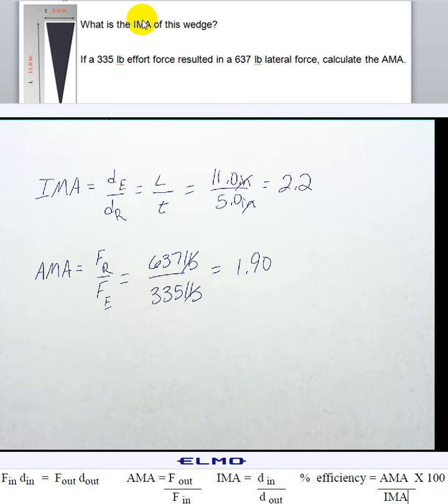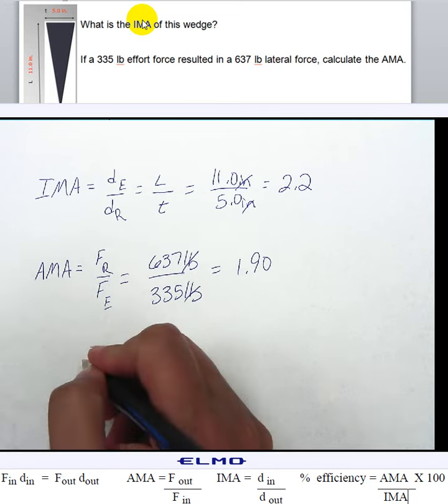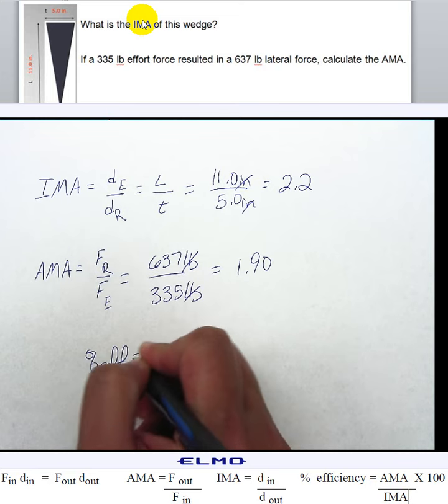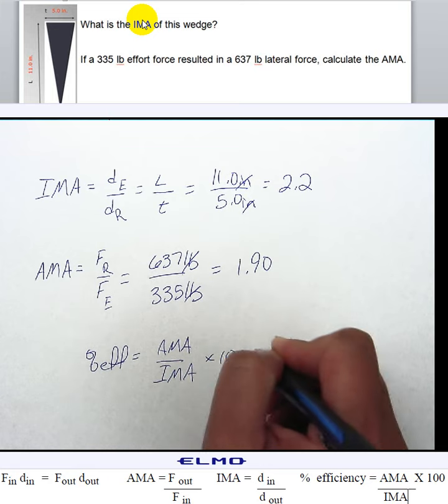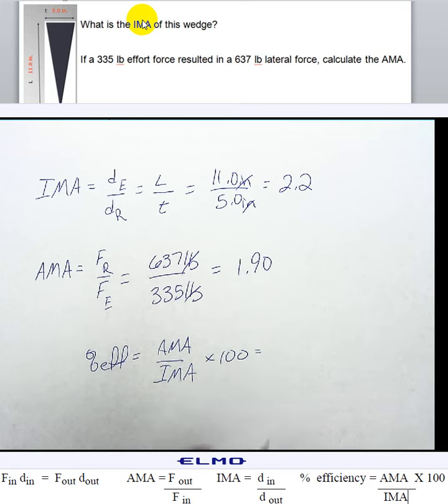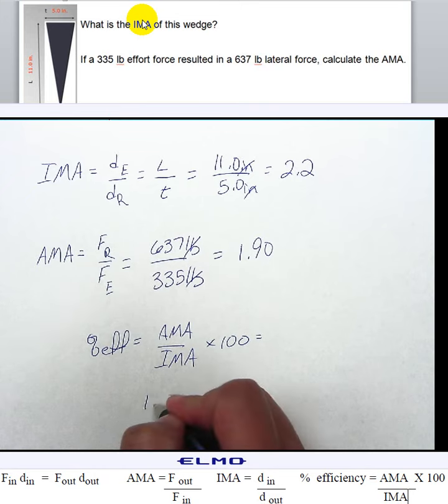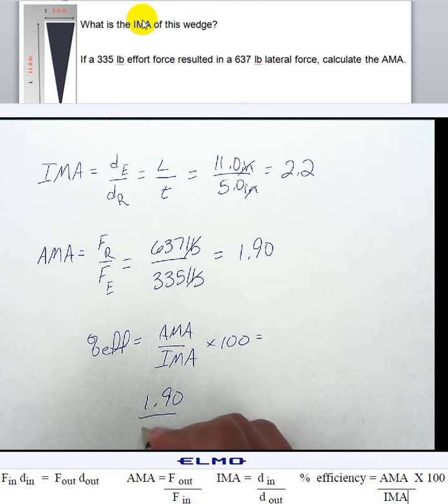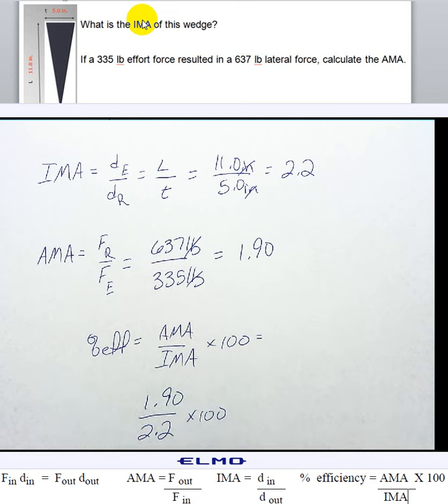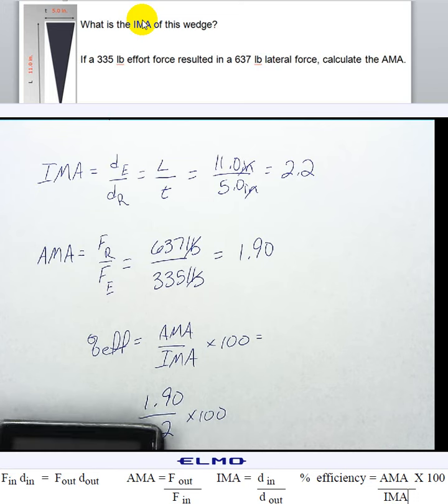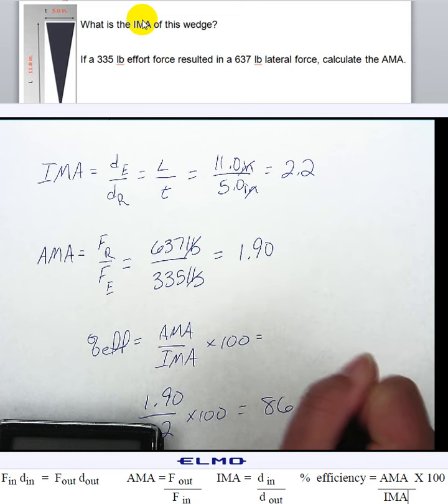Alright, so then if I want to know the efficiency of this wedge, I would say percent efficiency equals AMA over IMA times 100. Alright, so my AMA was 1.90, and my IMA was 2.2 times 100. So, 1.9 divided by 2.2 times 100 equals 86%.